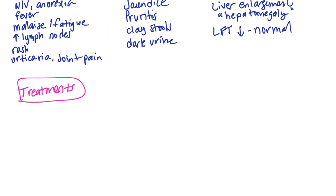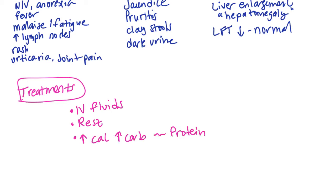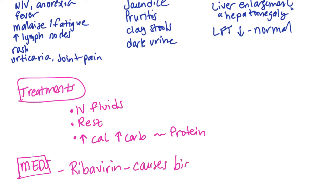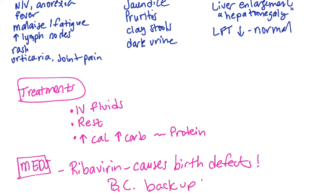The treatment regimen for hepatitis differs based on the type, because for hepatitis C we can give combo drugs that will help cure them. Mainly we're treating the symptoms since it is a virus, so IV fluids and rest are recommended. One medication that can be given is ribavirin, a drug used to treat viral hepatitis. This drug can cause birth defects, so any woman of childbearing age must have a backup birth control method when on this medication, and they will need routine pregnancy tests.